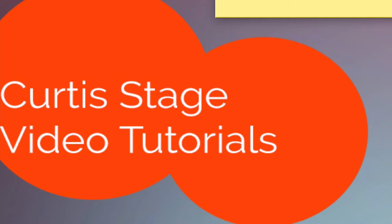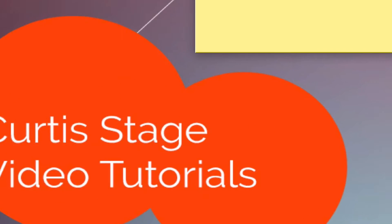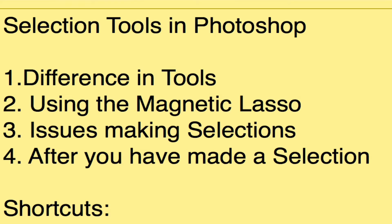Hello and welcome to Curtis Stage Tutorials. Today's tutorial is on selection tools in Photoshop. This is a beginning level Photoshop tutorial and we have a list of the things we're going to do. We're going to talk about the difference in the selection tools, the magnetic lasso tool in particular, issues making selections, and what you can do after you've made a selection.